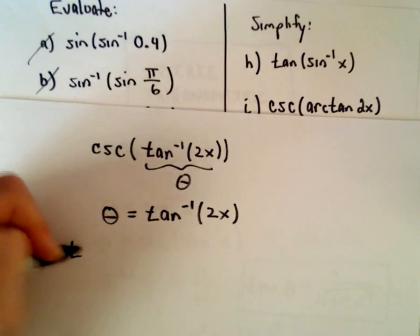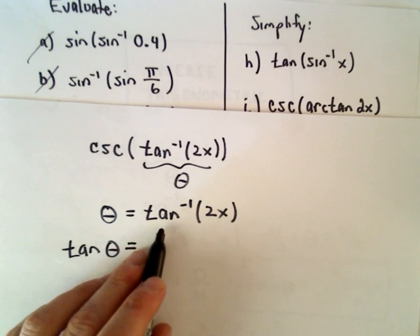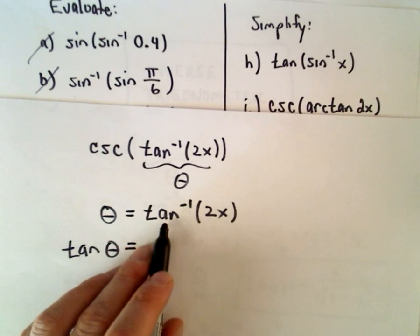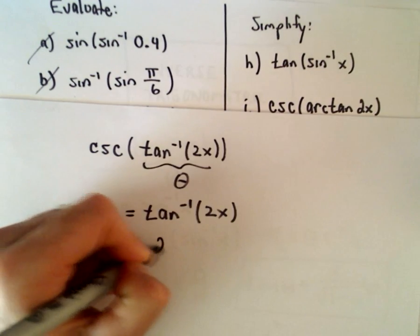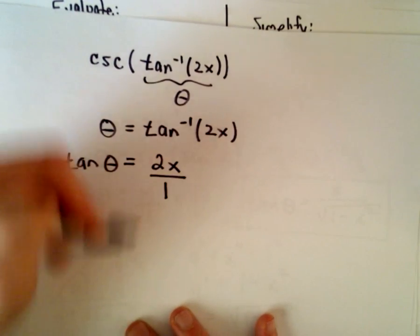Exact same motions. So theta is going to equal the stuff on the inside. If we take the tangent of the left side, we'll have tangent of theta. If we take the tangent of the right side, the tangent and the inverse tangent are going to cancel out, just leave us with 2x.